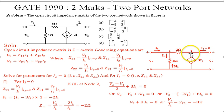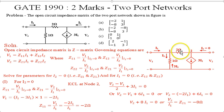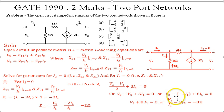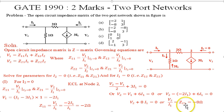With I2 = 0, the KCL at node 2 gives: (V2 - V1)/2 + 3I1 = 0. Simplifying: V2 - V1 + 6I1 = 0. Substituting V1 = minus 2I1: V2 + 2I1 + 6I1 = 0, so V2 + 8I1 = 0. Therefore Z21 = V2/I1 = minus 8 ohms.